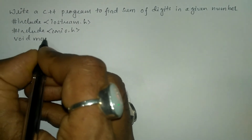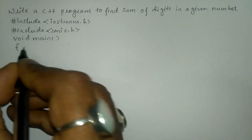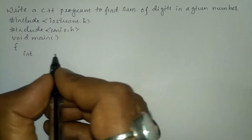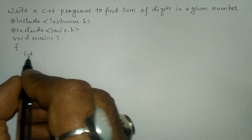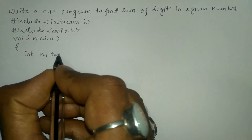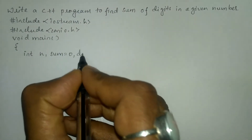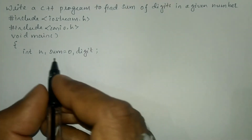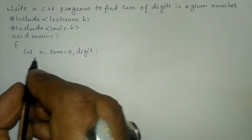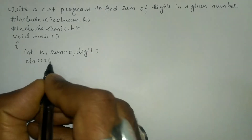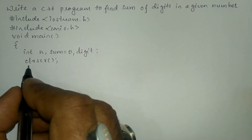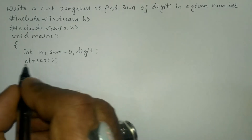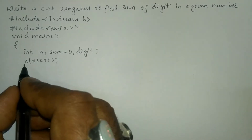Now we're going to write the void main function with a curly open brace. In the declaration section I want to declare all the variables using the data type int: n, and then sum is equal to zero, and one more variable called digit, which is used to take out a single digit from the entered number. Next I'm going to write the clrscr() function to clear the screen, written after declaring the variables. You can write it or omit this statement.